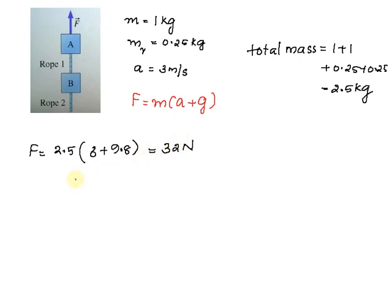The second question is the tension at top of rope 1. So what is the tension at this point? Again, we use the formula T equals mass into acceleration plus gravity. Here the mass will be 1 plus 0.25 plus 0.25, that is 1.5, into 3 plus 9.8, and we get the value as 19.2 newtons.